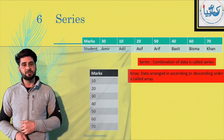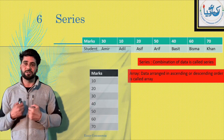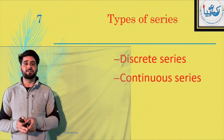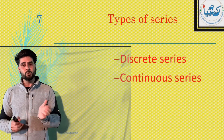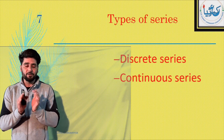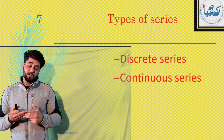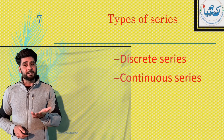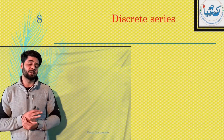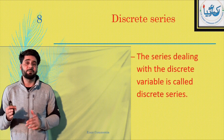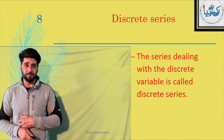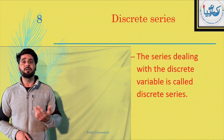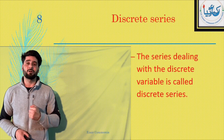Now this series is of two types. The first one is discrete series and the second one is continuous series. The series dealing with discrete variables is called discrete series — and a discrete variable is one which can't be expressed in fractions. The series dealing with continuous variables is called continuous series.